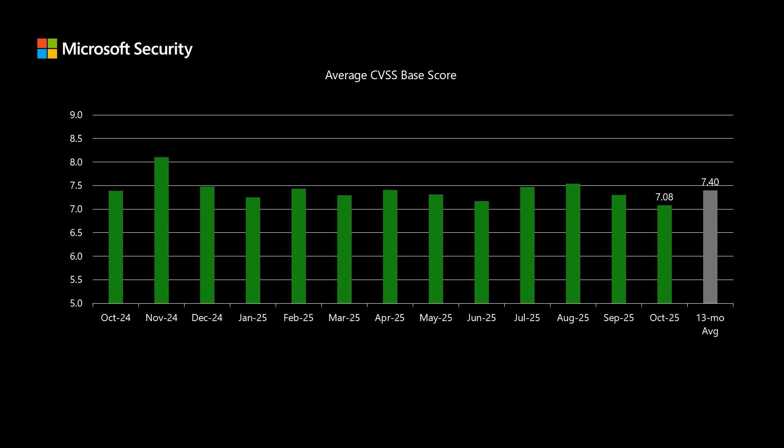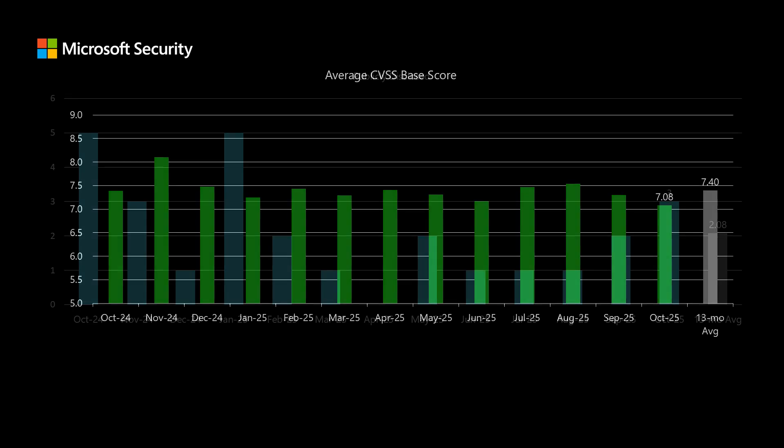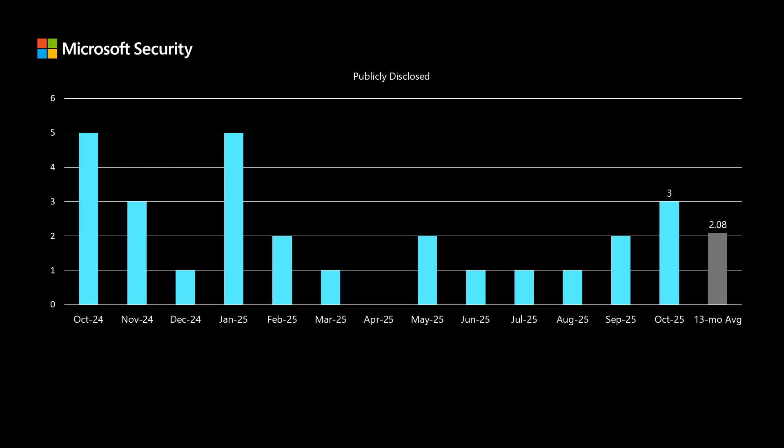Another thing that the CVSS score does not contain is whether or not a vulnerability was publicly disclosed. These are the types of vulnerabilities where, in one way or another, prior to release, the existence of the vulnerability has been made public. It could be a security researcher making a social media post that they found an issue in some type of software, or on the other end, a threat actor publishing a proof of concept that allows exploit code to be built. This month, we have three vulnerabilities that fall into the publicly disclosed category — a little bit above our average over the past 13 months of just over two.